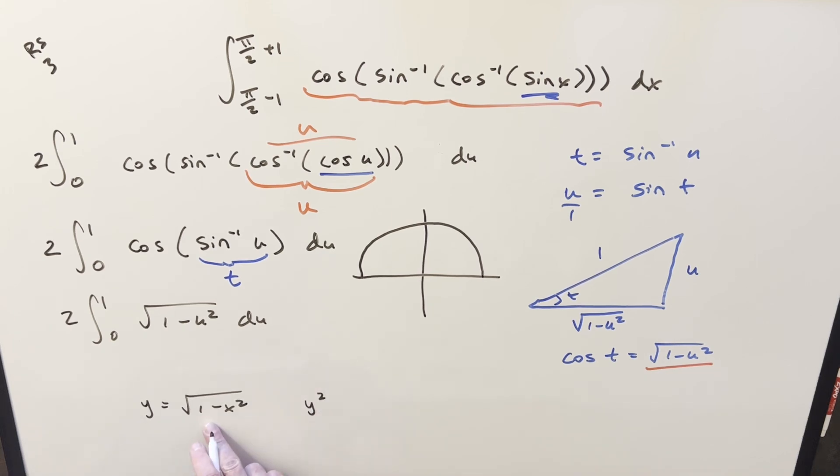So you square both sides on this. You're going to get y squared equals 1 minus x squared. You rearrange it and you get this equation for the circle x squared plus y squared equals 1. And so this would be the full circle with radius of just 1. So coming back here, area of a circle, π r squared. So the full circle would just be an area of π.